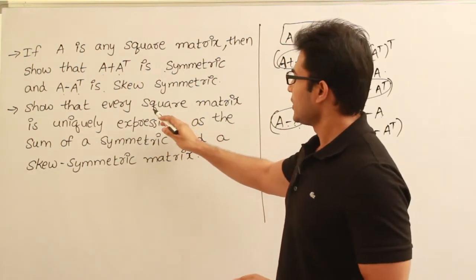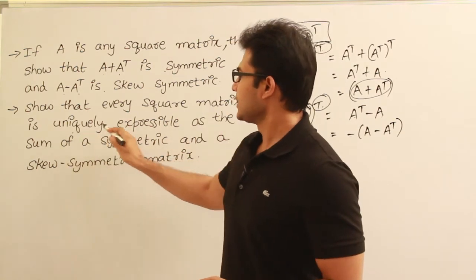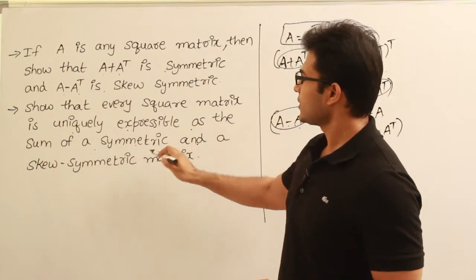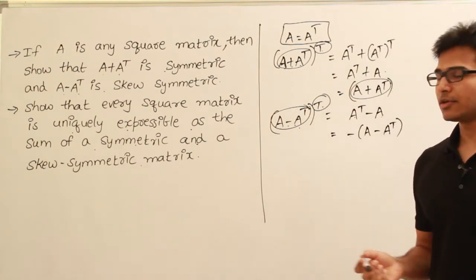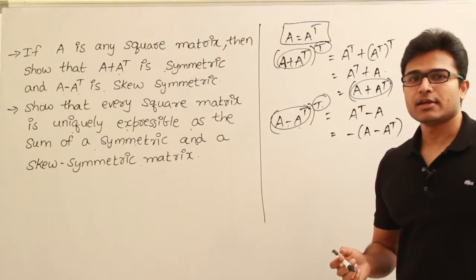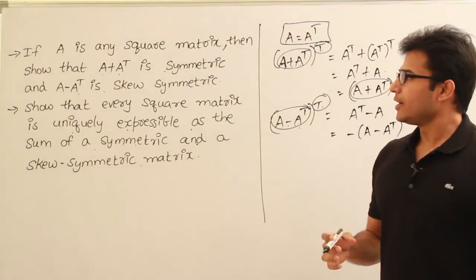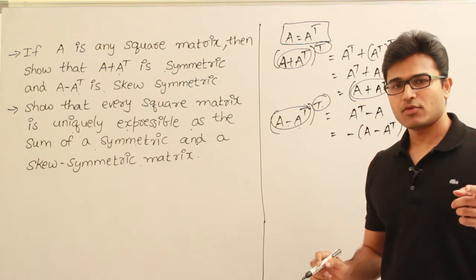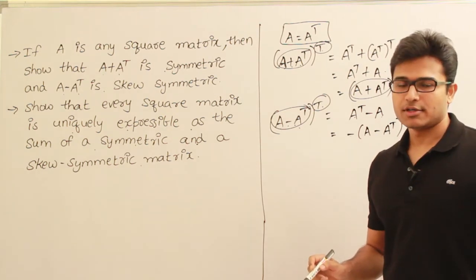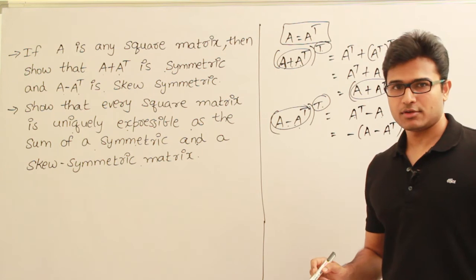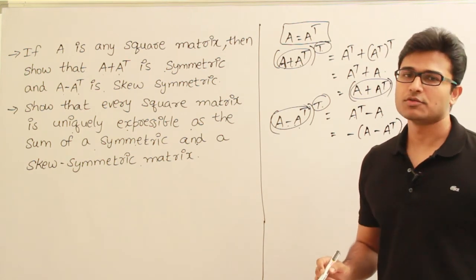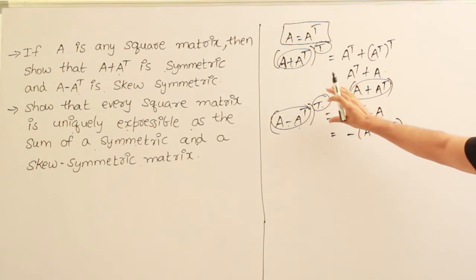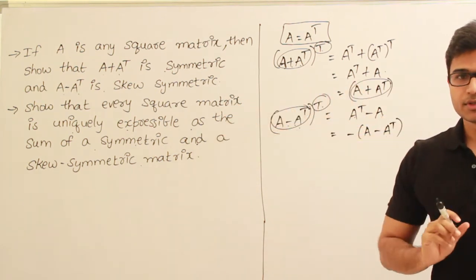Now the second question: show that every square matrix is uniquely expressible as the sum of a symmetric and a skew symmetric matrix. They are saying every square matrix can be written as the sum of two matrices — one symmetric and one skew symmetric. I am going to use the first example to prove this second one.